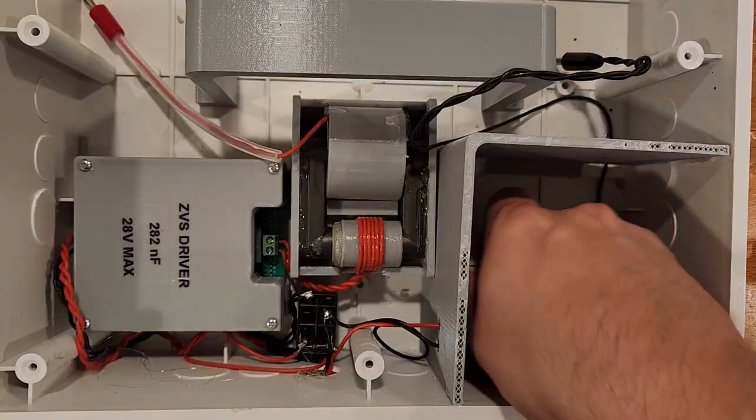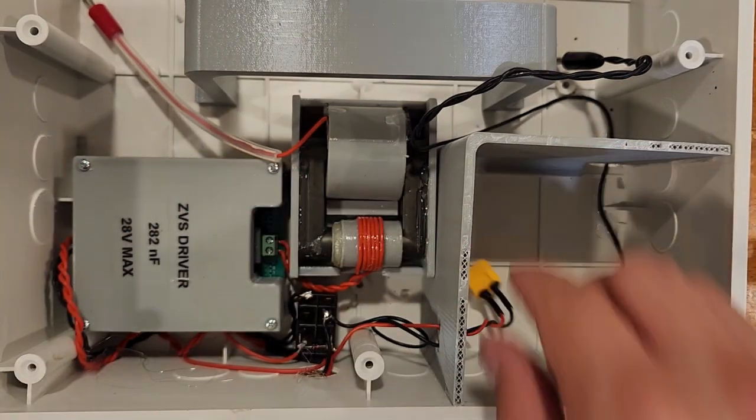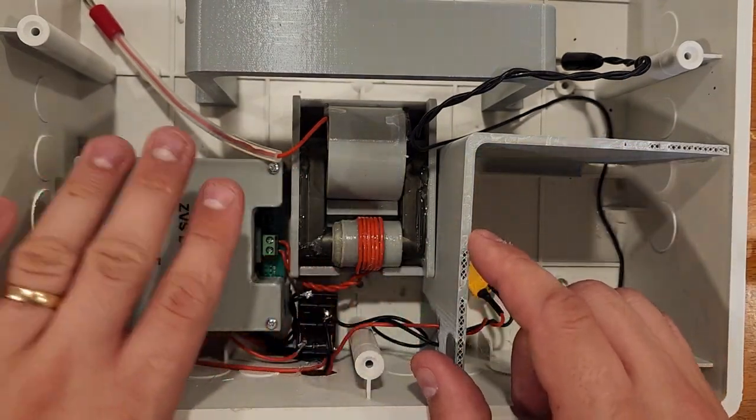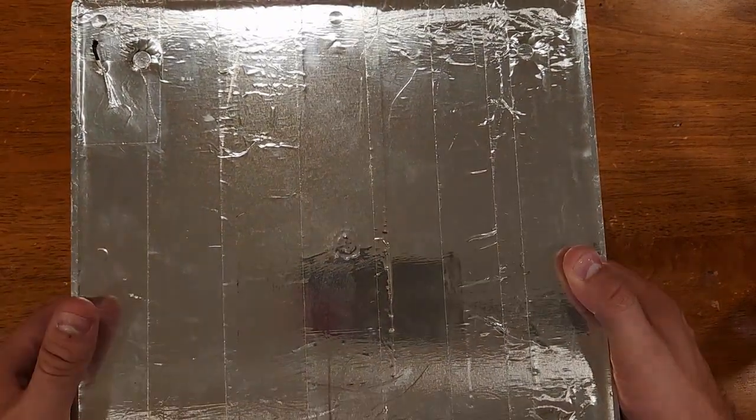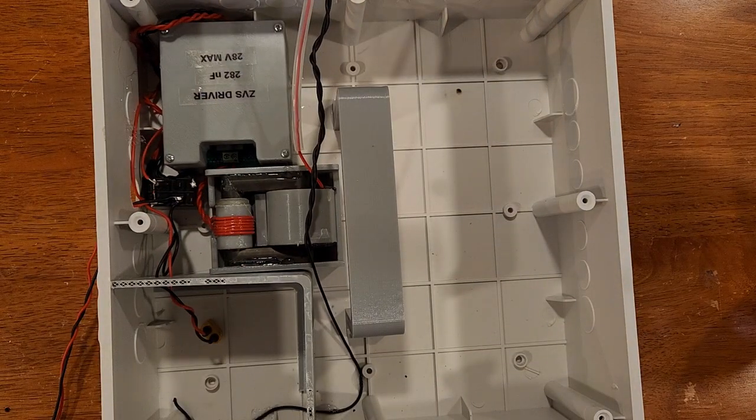I put my transformer, ZVS driver, and a battery compartment inside of a plastic box. The whole system will run off 24 volts from a 6-cell LiPo battery. The bottom of the box is covered in foil tape to serve as a ground plane, because all these charges need to have a really good ground reference or else really bad things can happen within the circuit or to your power supply.